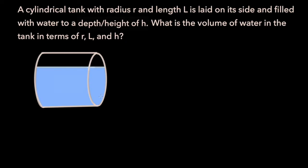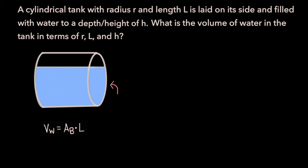Since the three-dimensional shape the water forms inside the cylinder is uniform throughout, we can calculate the volume of the water by taking the area of the base and multiplying by the length of the cylinder, which is l. The base is this surface on the side of the cylinder, so this problem comes down to finding the area of that irregular shape.